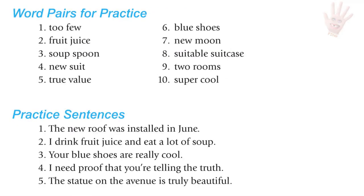Word pairs for OO: too few, fruit juice, soup spoon, new suit, true value, blue shoes, new moon, suitable suitcase, two rooms, super cool.